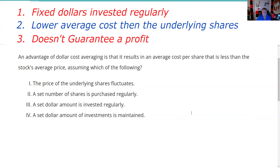So now let's answer the question. An advantage of dollar cost averaging is that it results in an average cost per share less than the stock's average price. That's exactly right — that's test question number two. Now, assuming which of the following: The price of the underlying shares fluctuates — exactly right. That's the point of what's making it work: we're buying less shares when they're high and more shares when they're low. So one is true.